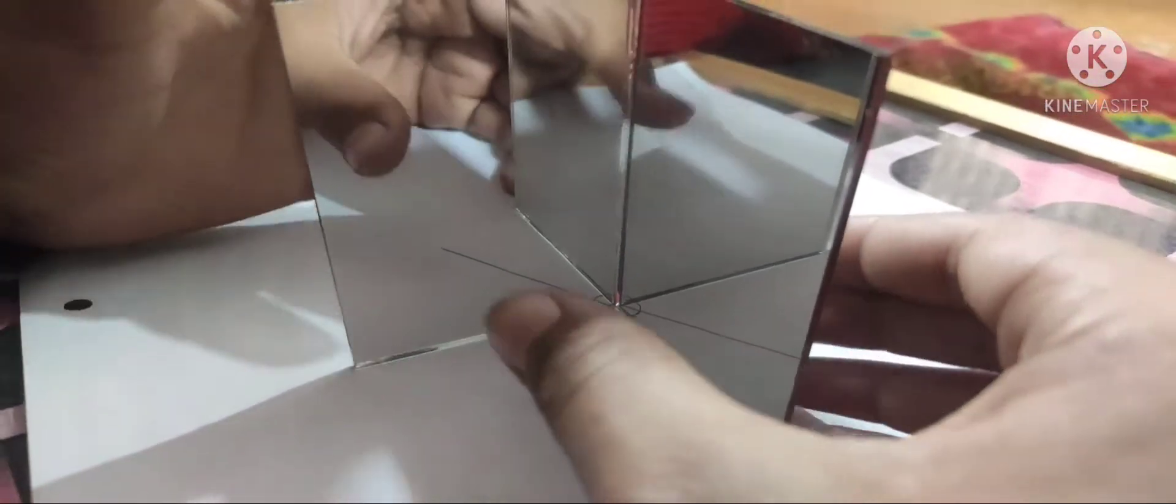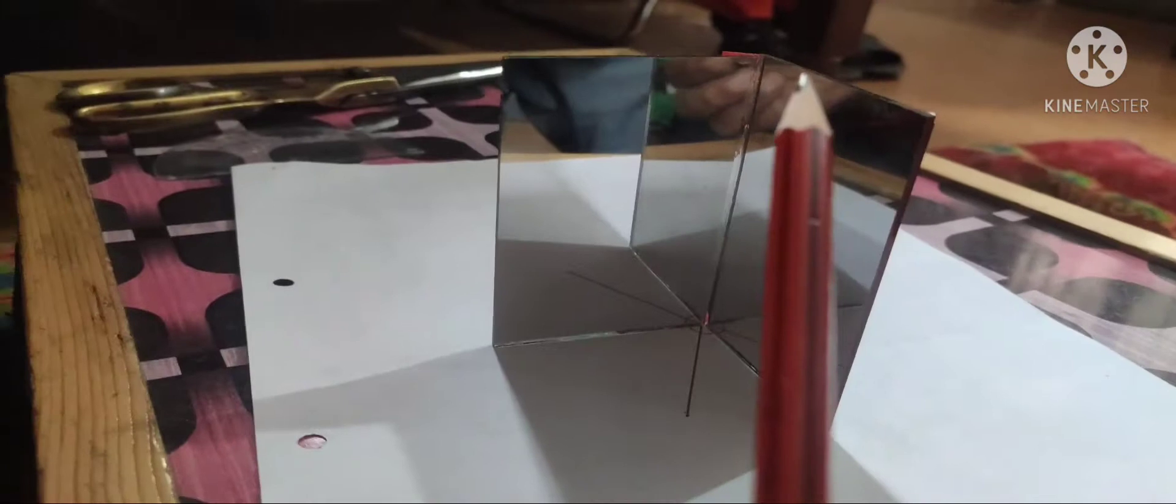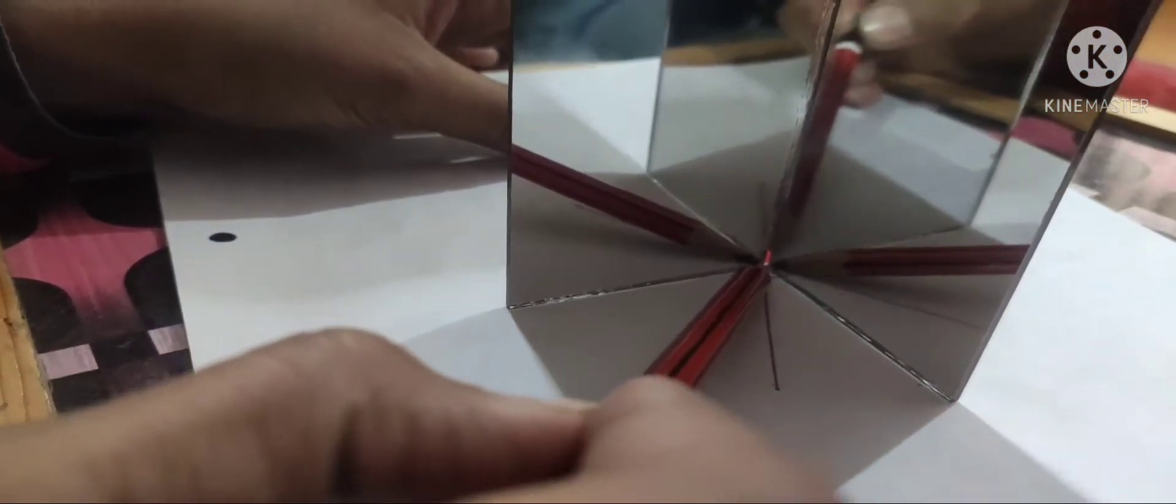After putting it on 90 degree angle, take your pencil and touch it between the joint of the mirror.